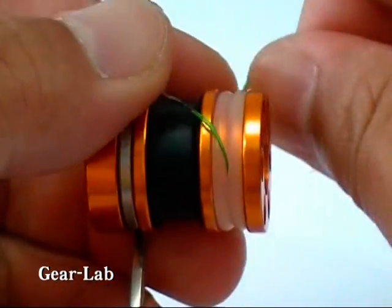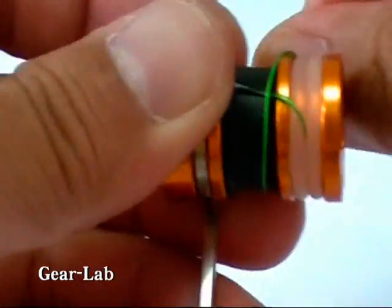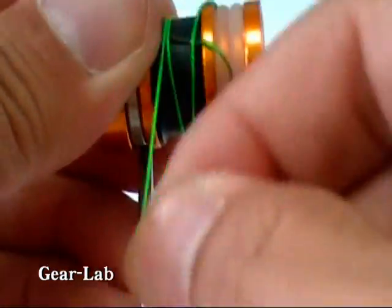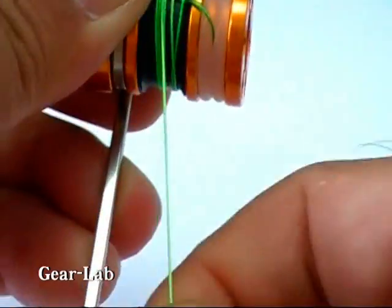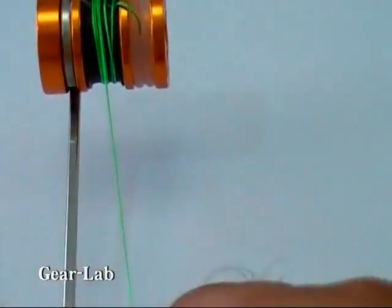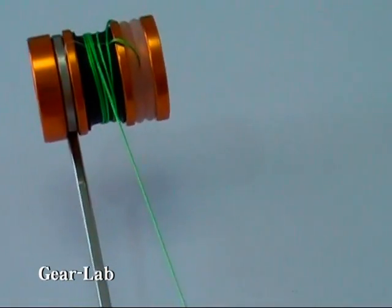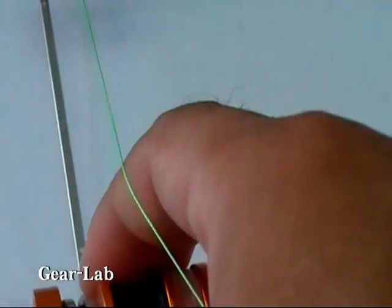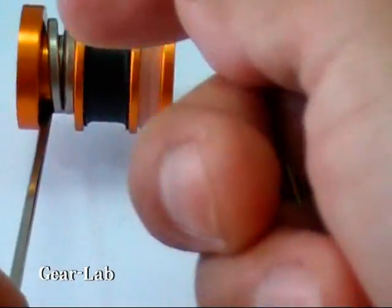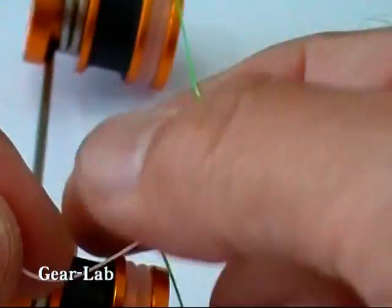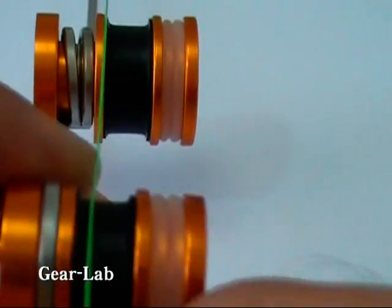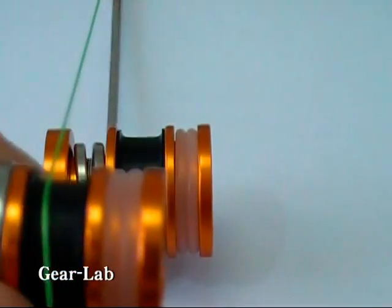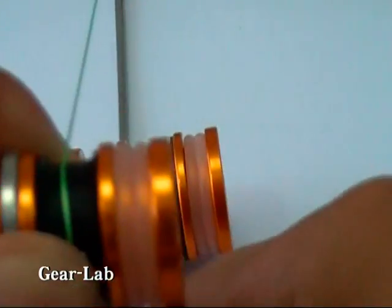Wind the PE line six times around the black part. Then, wind it up the same way on the opposite bobbin. Put enough tension on the line when winding it on both ends to create a bow shape.